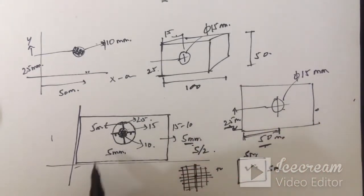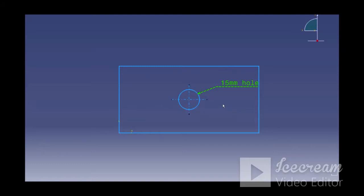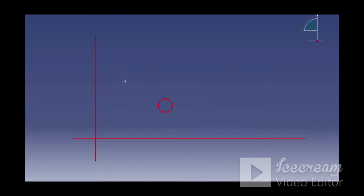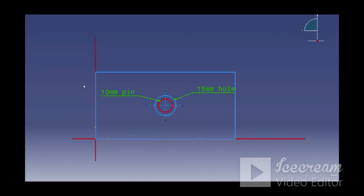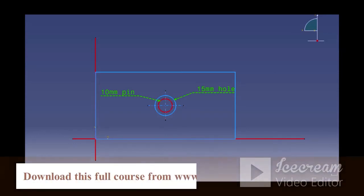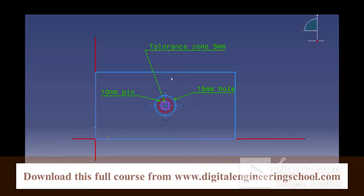Now let us simulate this situation in computer to check whether we are right or wrong. So this is our part with 15 mm hole here and this is our assembly in which 10 mm diameter pin is there and now this part has to clear this pin. So we discussed how much dimension we should give from this axis to the center point of the hole and how much the hole can deviate from these axes.